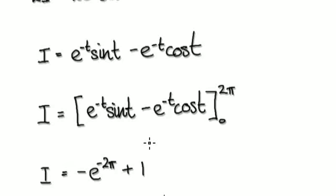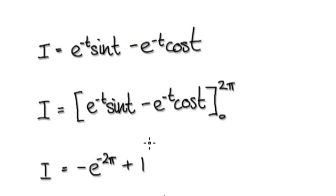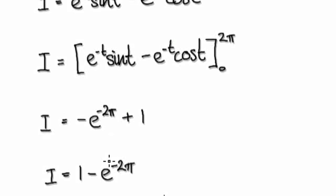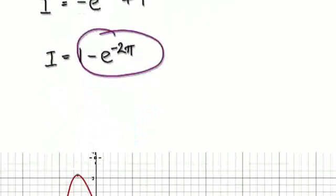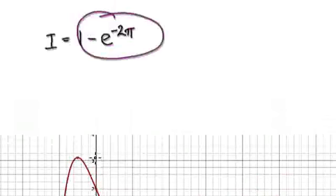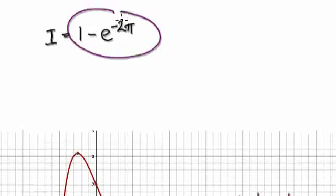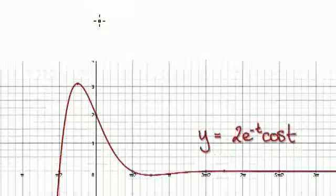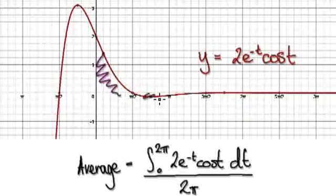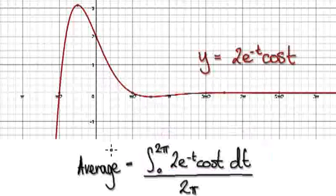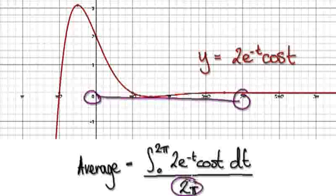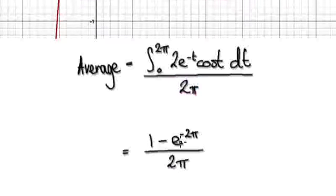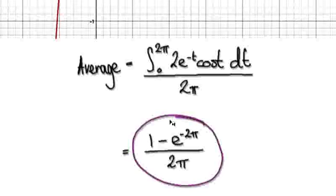That takes it to here, so the area is given by this value. Remember, that's the area — but we need the average height, so we divide by the distance 2π. Dividing by 2π gives the average distance.